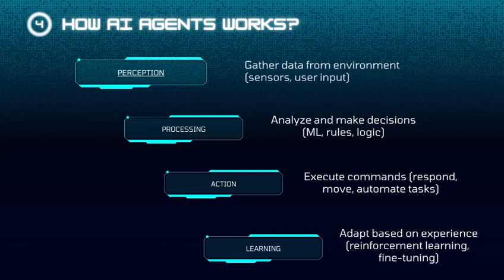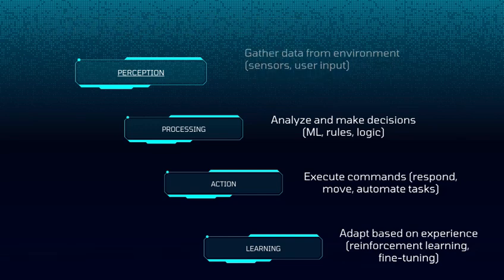How AI agents work: Perception – gather data from the environment, including sensors and user input.